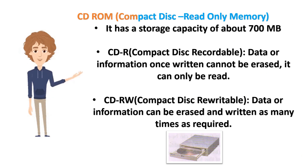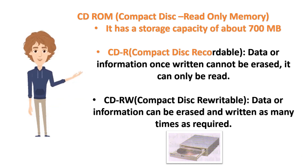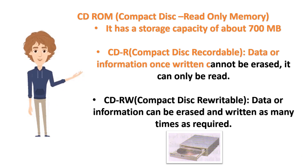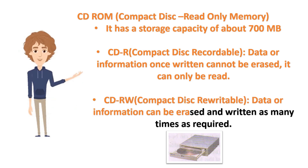CD-ROM (Compact Disk Read-Only Memory) has a storage capacity of about 700MB. CD-R (Compact Disk Recordable): data or information once written cannot be erased, it can only be read. CD-RW (Compact Disk Re-Writable): data or information can be erased and written as many times as required.